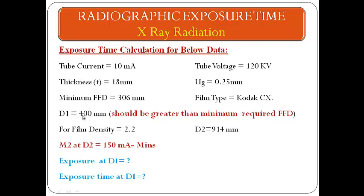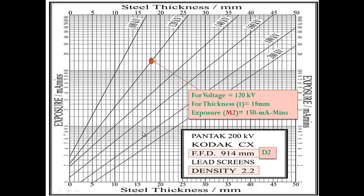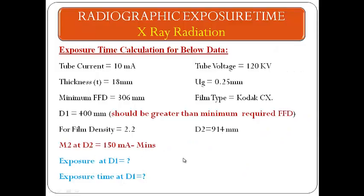Always remember that D1 — the distance at which you are going to make the shot — must be greater than the calculated minimum FFD. So we select D1 = 400 mm. For film density 2.2, D2 = 914 mm and M2 = 150 mA·min.